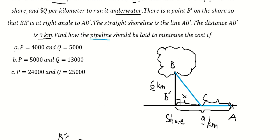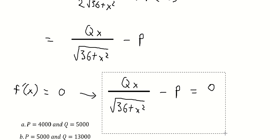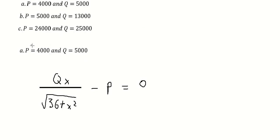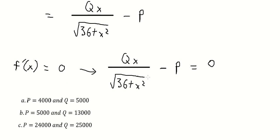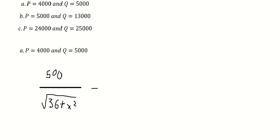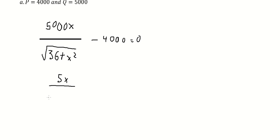Because we have three scenarios, we consider them one by one. For case A, we put 5,000 for the underwater rate and 4,000 for the shore rate. Dividing by 1,000, we get 5x over the square root of 36 plus x squared minus 4 equals 0. We isolate the square root term and square both sides.